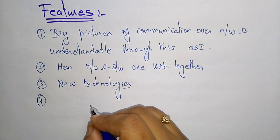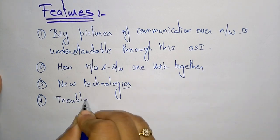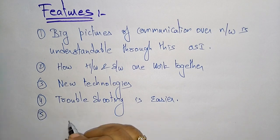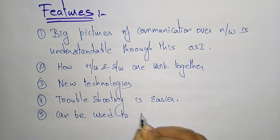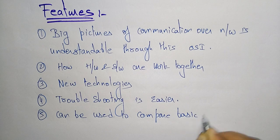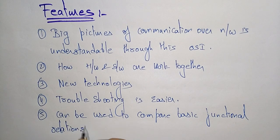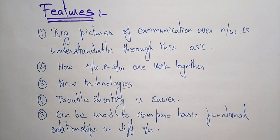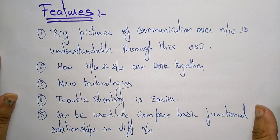Troubleshooting is easier because each layer is separate — for each layer, troubleshooting will be easier. It can also be used to compare basic functional relationships on different networks. These are the different features of the OSI reference model. In the next video, I will explain the architecture of the OSI reference model.